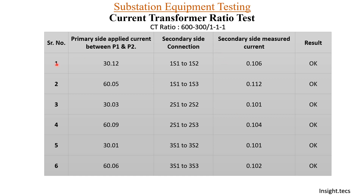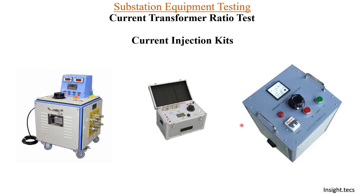You can see here a compiled table of the different readings we have measured — the primary amperes, the secondary connections, and the secondary current obtained. We have learned the basic concept of how the CT ratio test is performed. In present conditions, current injection kits are available in the market, and using those kits you can easily measure the ratio of the CT.